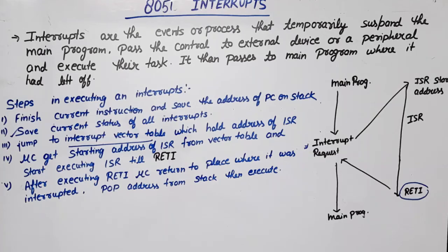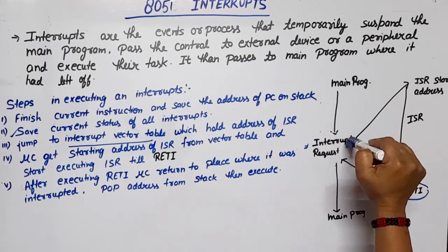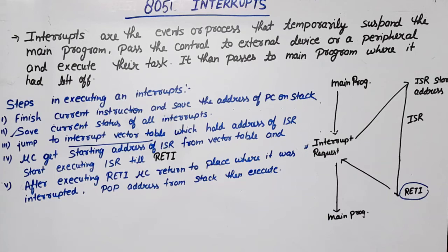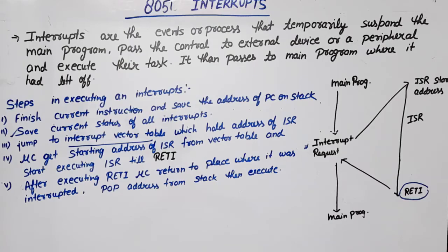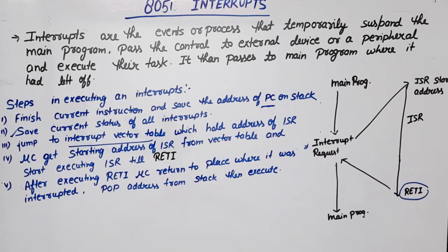I am going to discuss the steps required to execute an interrupt. First, execution of the main program continues. Meanwhile, an interrupt request comes — either from on-chip or external devices. Step 1: the microcontroller finishes the current instruction that is already running. Then it saves the address of the next instruction — it saves the PC content onto the stack — so that in future it can return to that point.